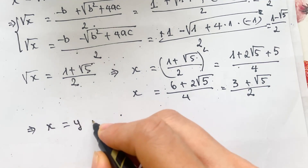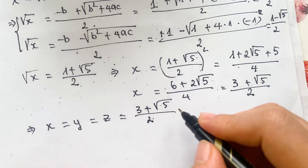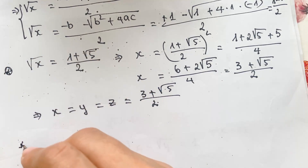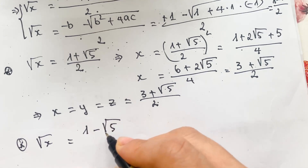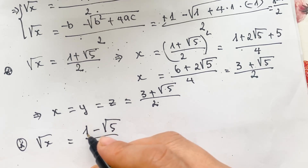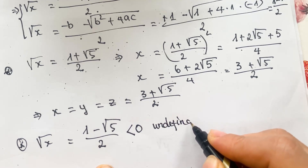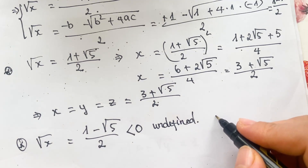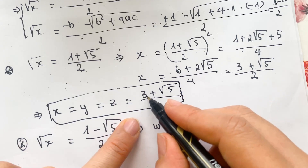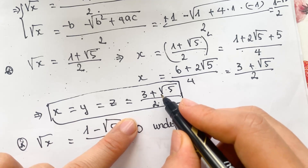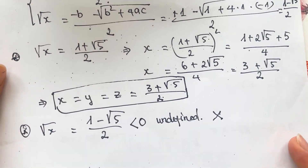So we have x equals y equals z equals 3 plus square root of 5 over 2. For the second case, when square root of x equals one minus square root of 5 over 2, we can see that this value is less than zero, so it is undefined as a square root. Therefore we discard this case. The solution is x equals y equals z equals 3 plus square root of 5 over 2. Thank you for watching my video. Don't forget to subscribe to my channel. Love you all, bye bye.